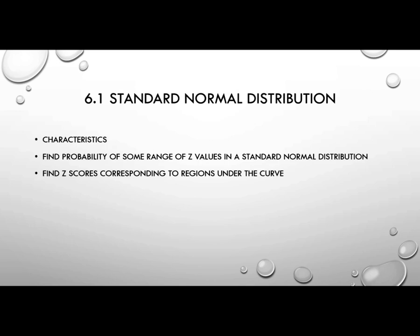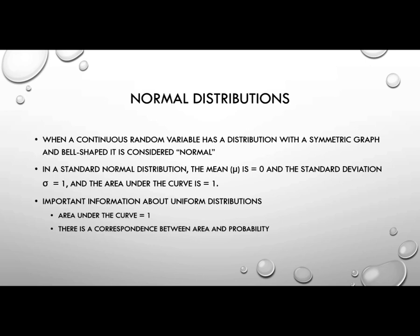So in this section we're going to talk about the characteristics, the probability of some Z-values, and find Z-scores for the standard normal distribution. When a continuous random variable has a distribution with a symmetric graph and it's bell-shaped, it's considered normal. In a standard normal distribution, the mean mu is 0, and the standard deviation sigma is equal to 1. And the area under the curve also is equal to 1. Important information about uniform distributions is also that area under the curve is equal to 1, and there is a correspondence between area and probability.